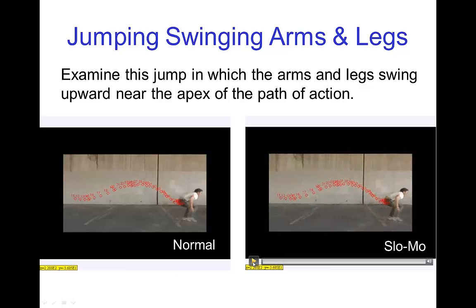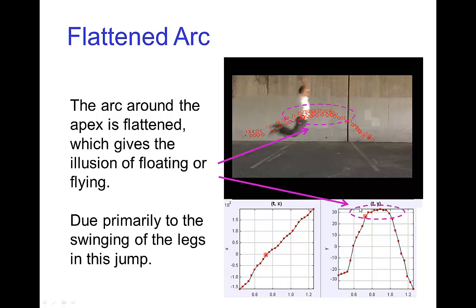Now if you look at this somewhat carefully, and here we're tracking the waistline of the person, the resulting graph of the height on each frame is noticeably flatter around the apex. So they almost look as if they have a straightened path of action like they're flying.